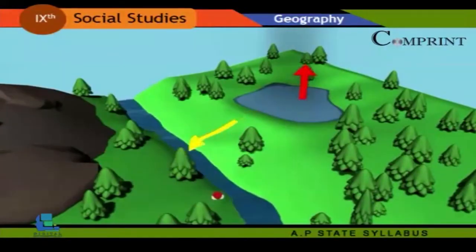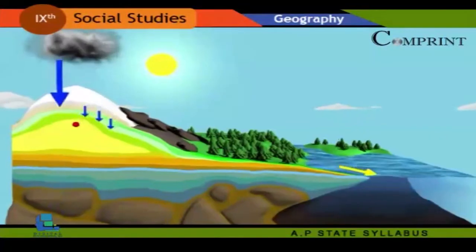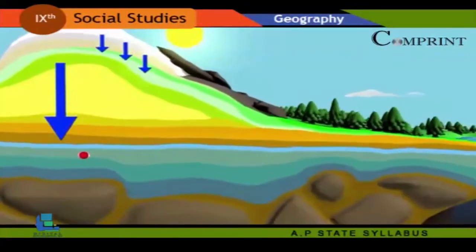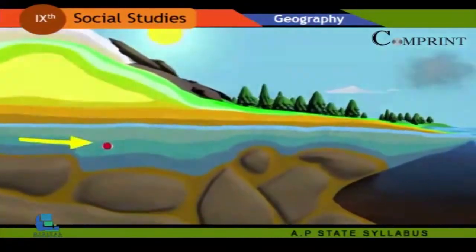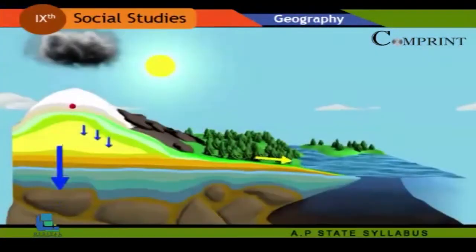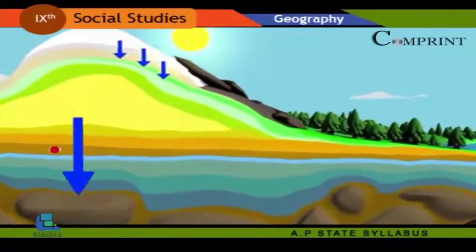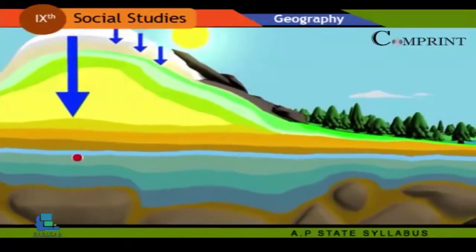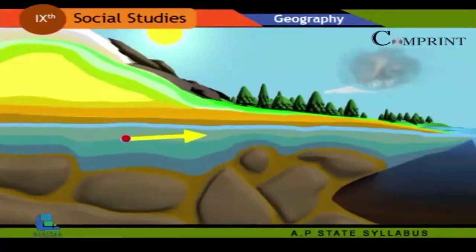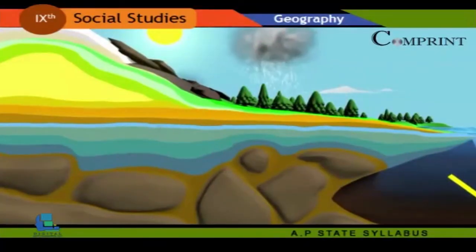Runoff: Most of the water which returns to land flows down hills as runoff. Some of it penetrates and recharges groundwater while the rest flows away. Groundwater: Under special circumstances, groundwater can even flow upward in artesian wells. The flow of groundwater is much slower than runoff.